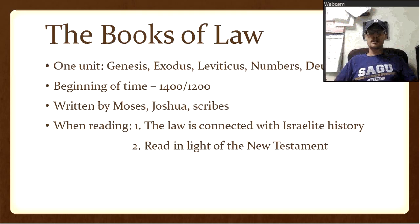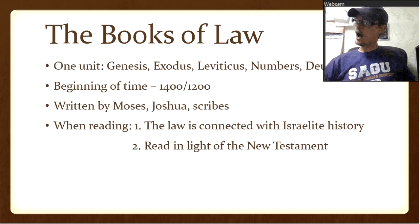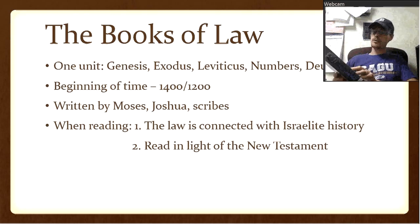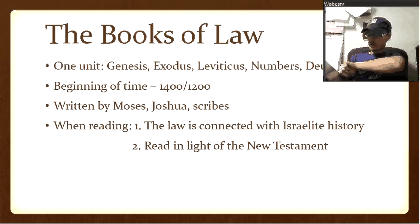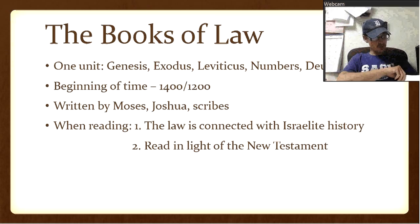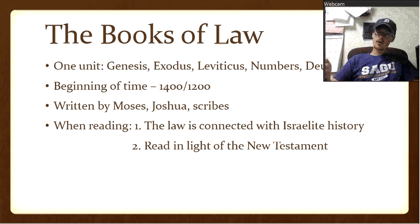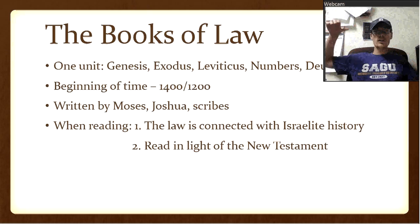Read it in light of the New Testament — ask whether the New Testament says anything about what you're reading. I want to quote from the book Grasping God's Word by Scott Duvall and Daniel Hayes. They give five things that are extremely important. First, the covenant is closely associated with Israel's conquest and occupation of the land — the law is tied to Israel going to Canaan and making it their land.